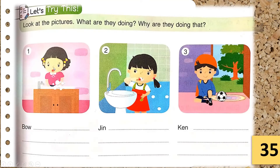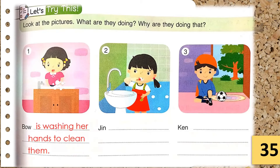In the first picture, we can see a girl named Bow. What is Bow doing? She is washing her hands. Why is she washing her hands? Bow is washing her hands to clean them.